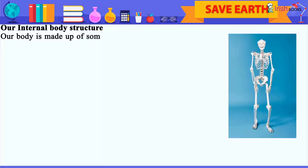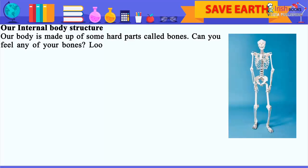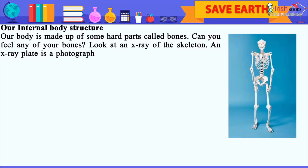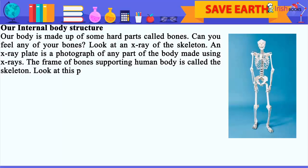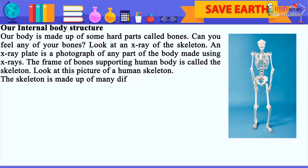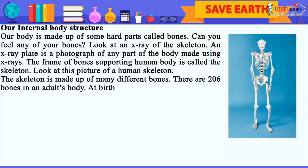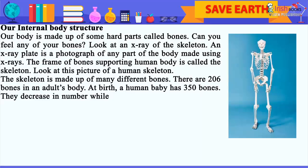Our body is made up of some hard parts called bones. Look at an x-ray of the skeleton. An x-ray plate is a photograph of any part of the body made using x-rays. The frame of bones supporting the human body is called the skeleton. The skeleton is made up of many different bones. There are 206 bones in an adult's body. At birth, a human baby has 350 bones.